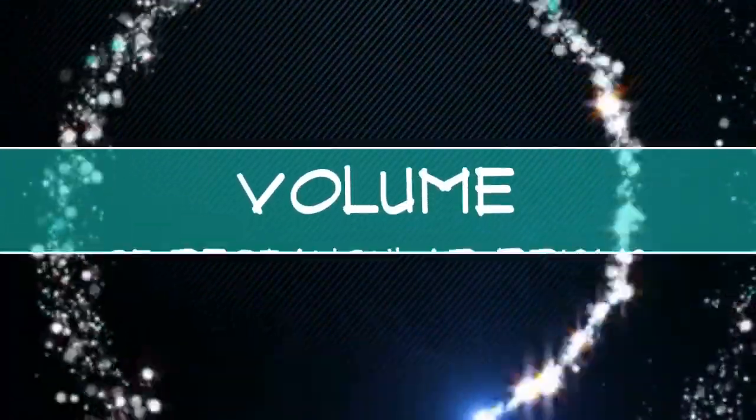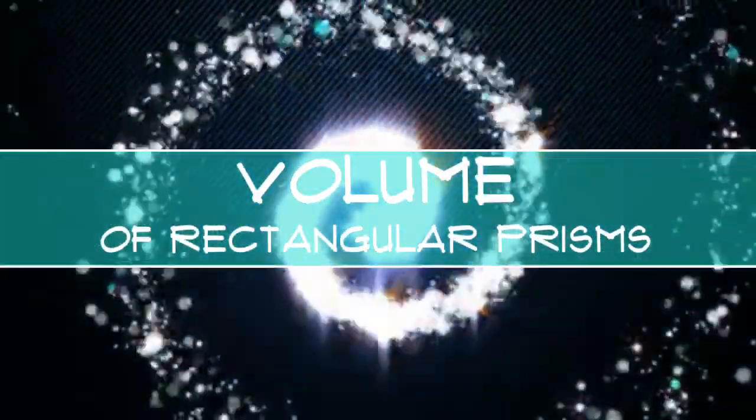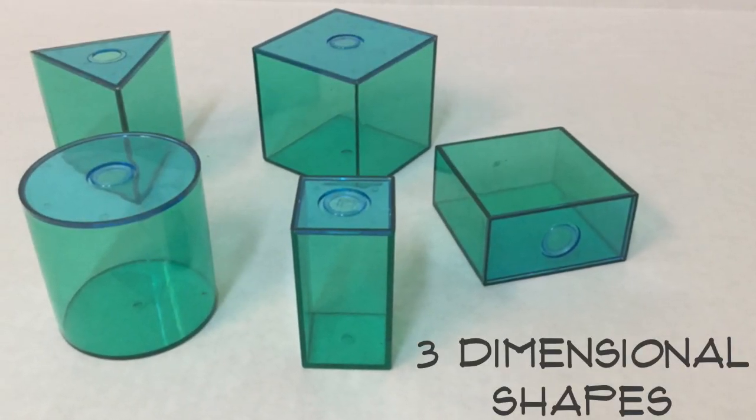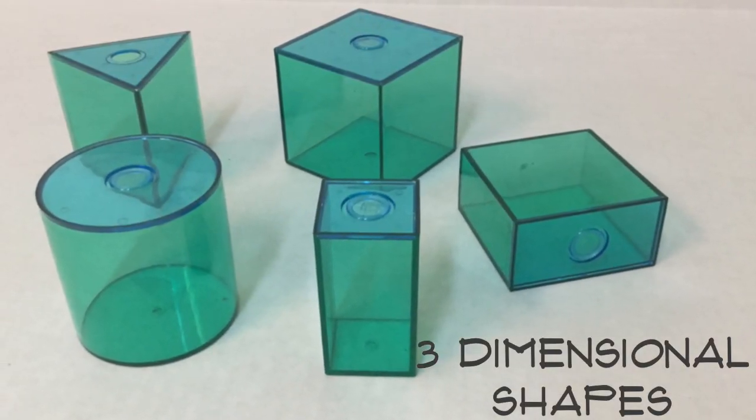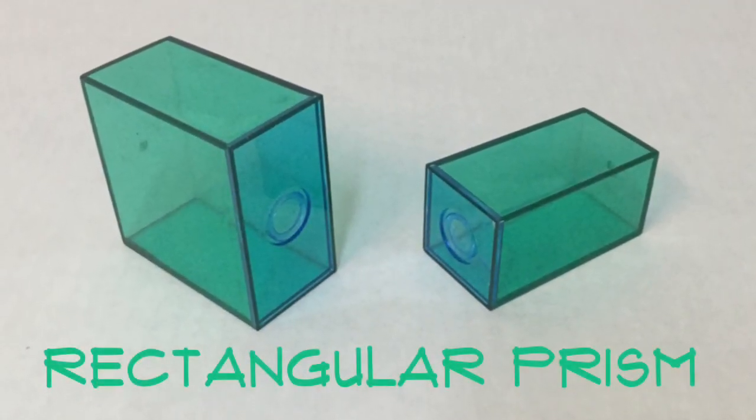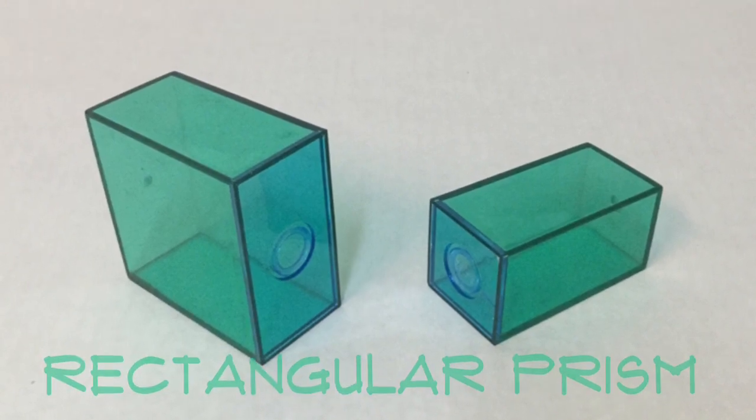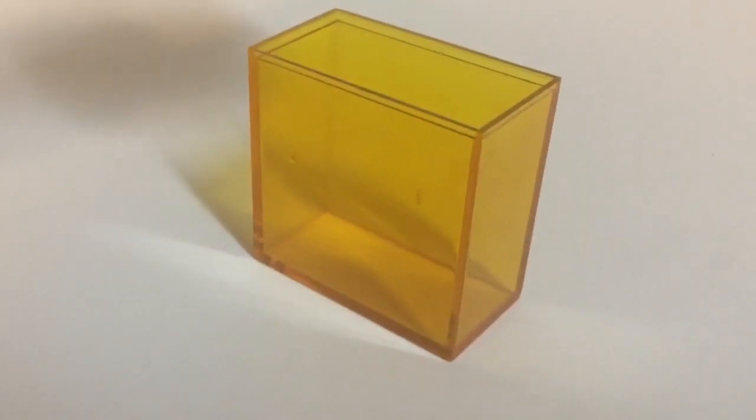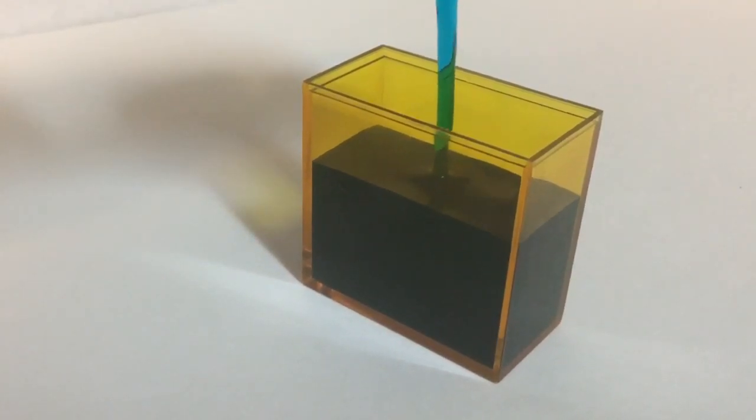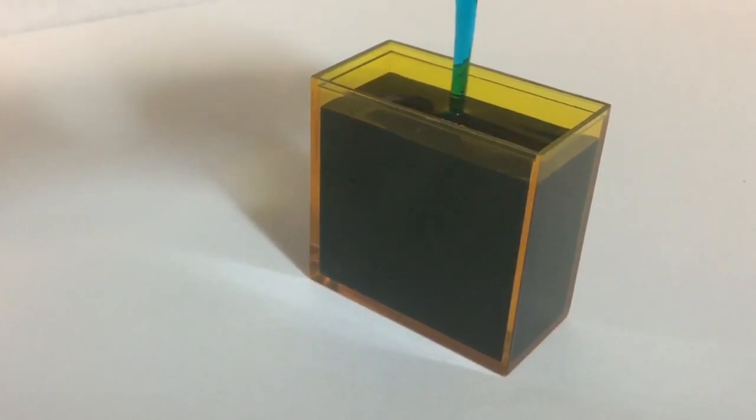Let's discover the volume of rectangular prisms. Volume is the capacity inside of three-dimensional shapes. We are going to specifically look at rectangular prisms. When you think about capacity, think about water filling up a container. How much water can actually be inside?